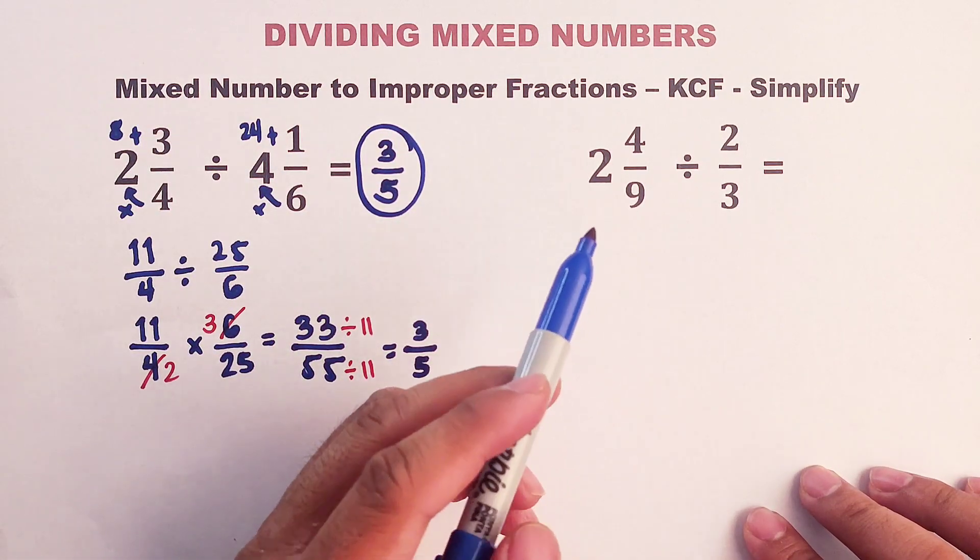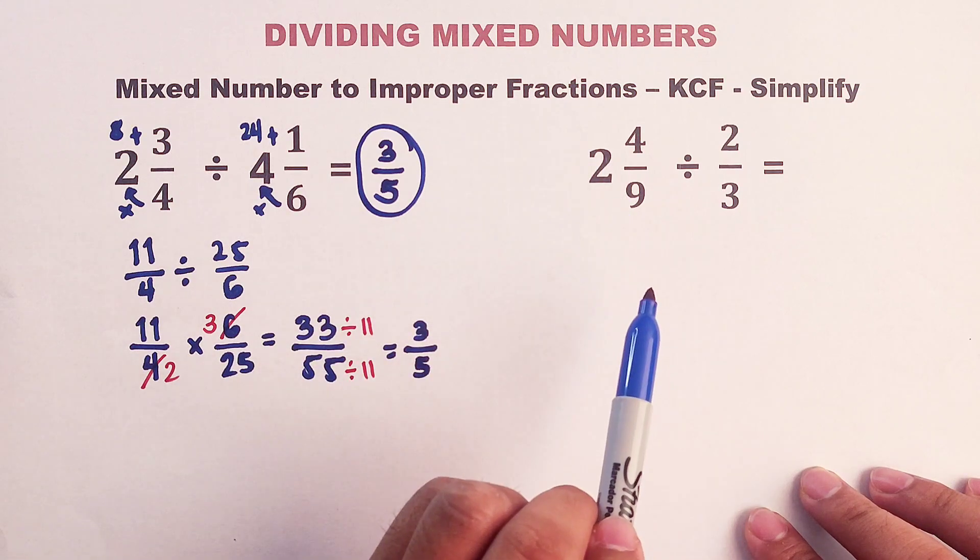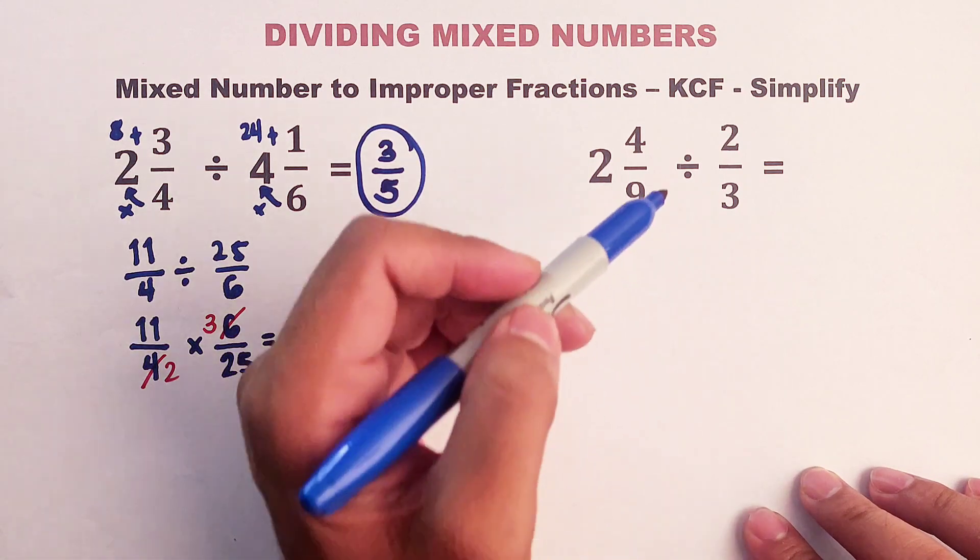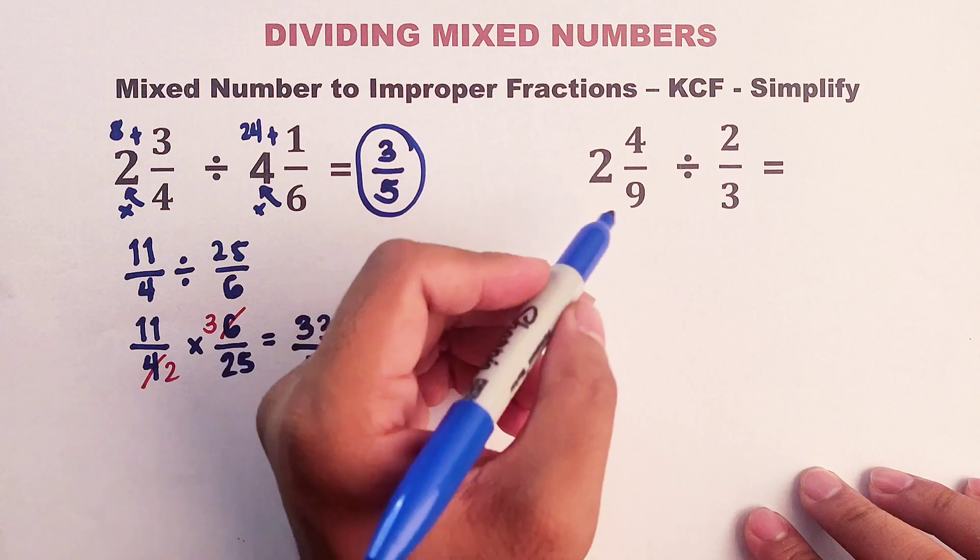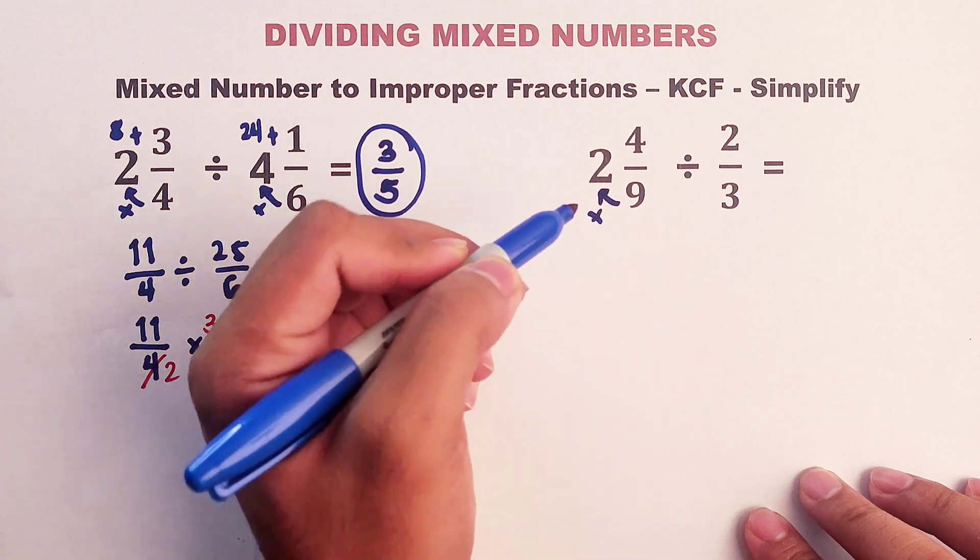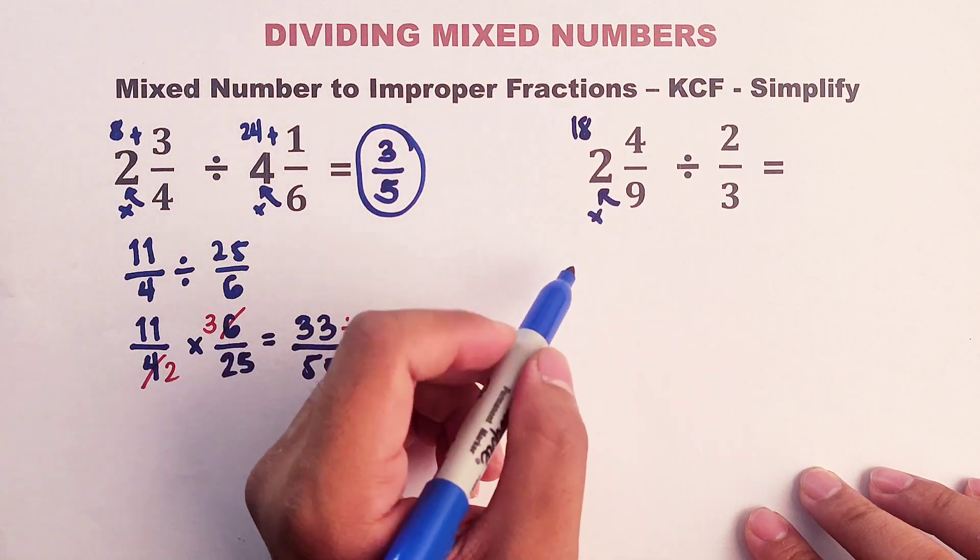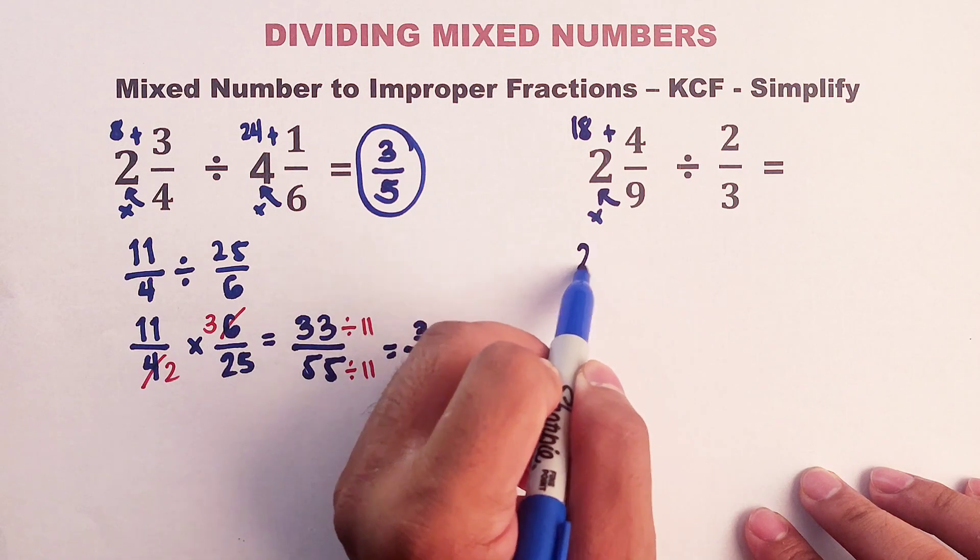For number 2, we have here a mixed number and a fraction. First, convert to improper fraction. 9 times 2. That would be 18 plus 4. That is equal to 22.